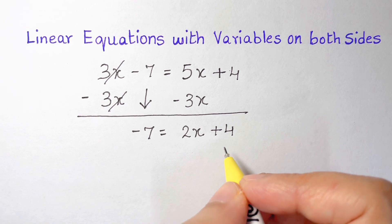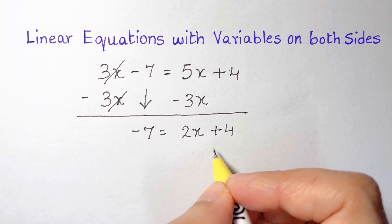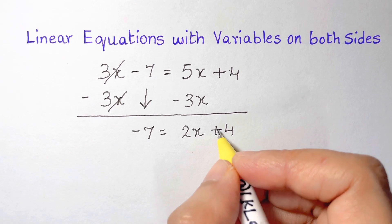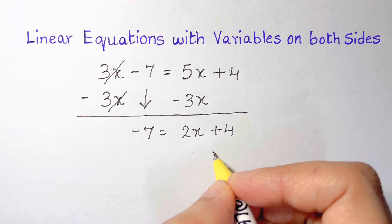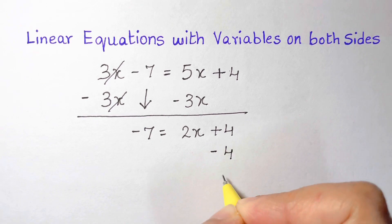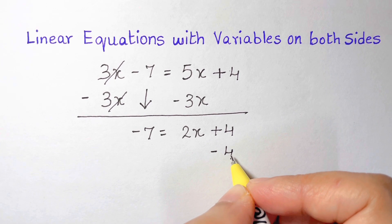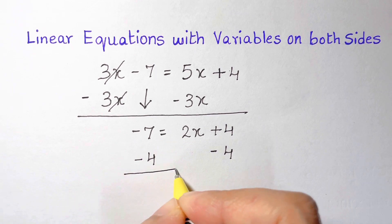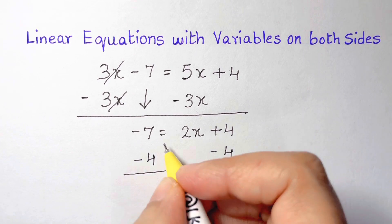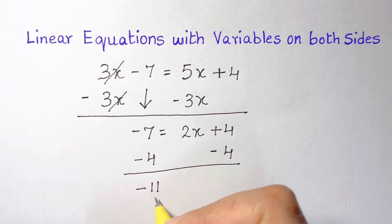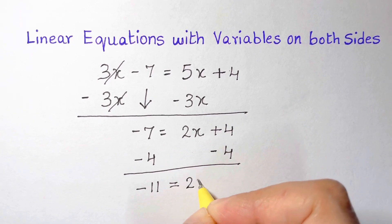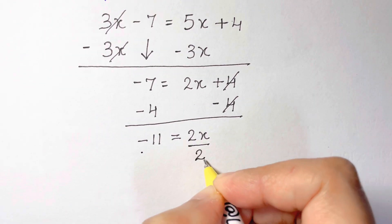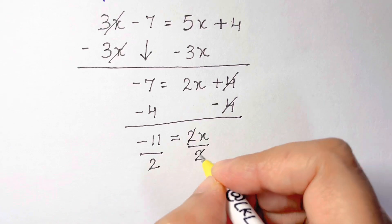I follow the same steps to solve any equation: use inverse operations and get rid of additions and subtractions first. So I do minus 4 on both sides. Negative 7 minus 4 is negative 11, equals 2x. The 4 minus 4 cancels itself out.